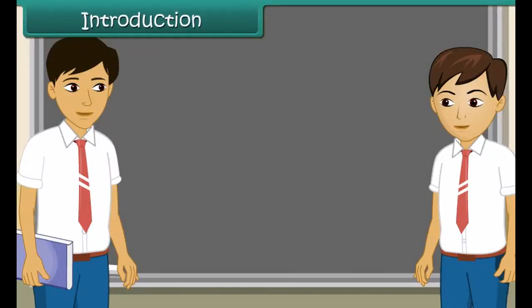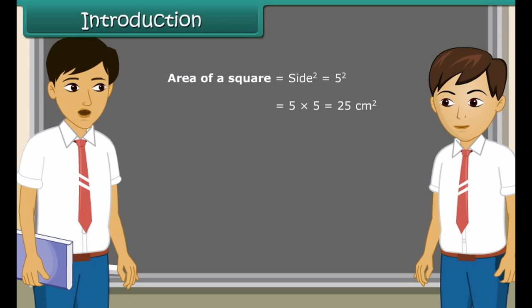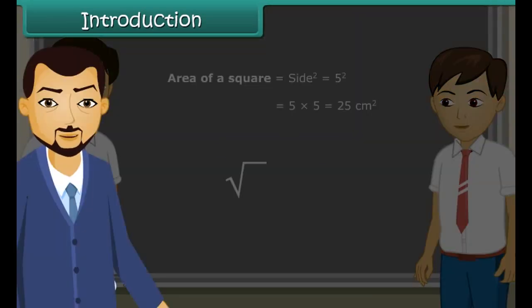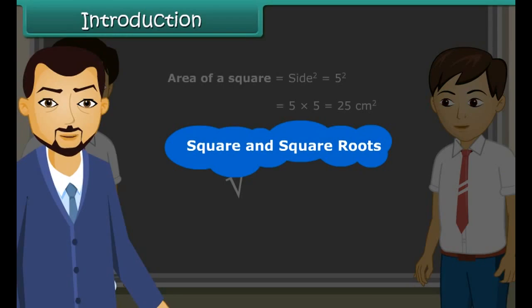Brother, I am in confusion about a maths problem. Can you please help me out? Sure, Sam. Tell me: what does the superscript of any number signify? It signifies the multiplication of any number with itself twice, so we call it the square of a number. There also exists a square root, which is just the inverse of a square. That sounds very interesting — I want to know more! Students, today we will learn about squares and square roots.